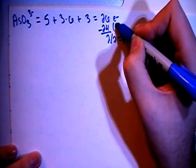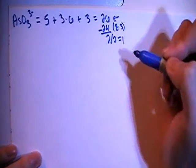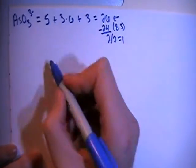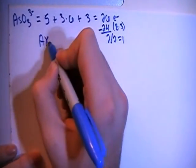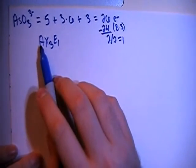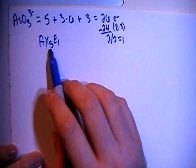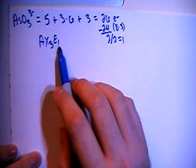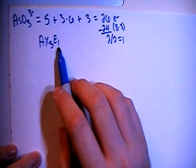Since 24 is equal to 8 times 3, that means that this structure is going to be an AX3E1 structure, meaning that there is a central atom surrounded by 3 peripheral atoms, and the central atom has 1 non-bonding pair of electrons on it.